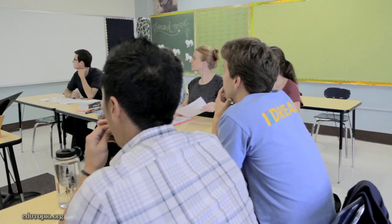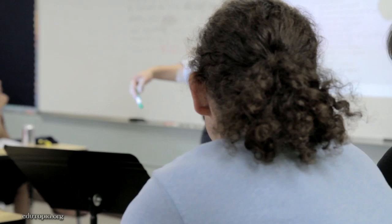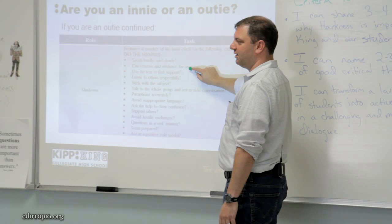And then there's the shadower. When you're a shadower, you're directly assigned to a student in the inner circle. Your job is to observe: did they speak loudly and clearly? Did they give reasons and evidence for their statements? Did they use the text? Did they paraphrase accurately? Typically, once students get used to this, they do very well with it.